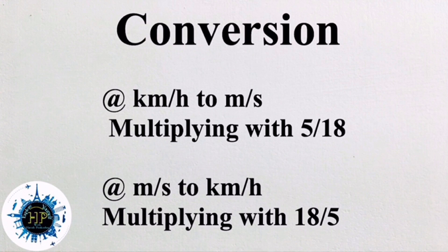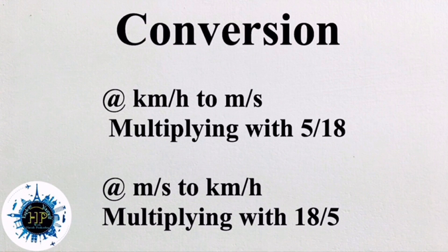For conversion, first we need to convert from kilometer per hour to meter per second — we multiply by 5/18. To convert from meter per second to kilometer per hour, we multiply by 18/5. The trick is: the numerator is the smaller figure. If 5 is on top (i.e., multiplying by 5/18), you get meter per second, which is the smaller unit compared to kilometer per hour.